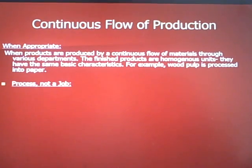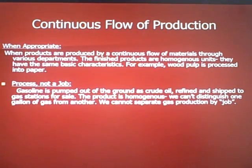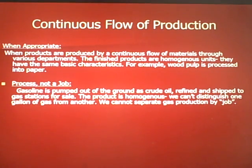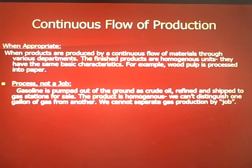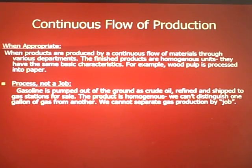We've talked about job costing in prior videos — costing a job based on a unique request that your client makes. We used a tree service company for that. This is different. This is a continuous flow of production. When products are produced by a continuous flow of materials through various departments — I've always used Levi's jeans as an example — the finished products are homogeneous; they have the same characteristics. For example, wood pulp is processed into paper. You can't really tell the batches of paper apart. It's a process, not a job.